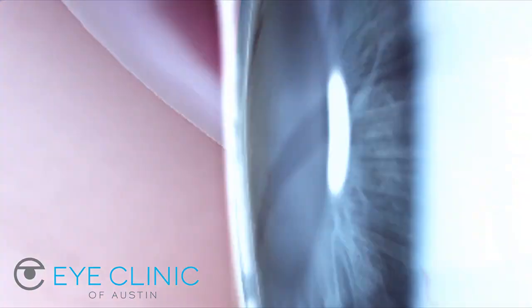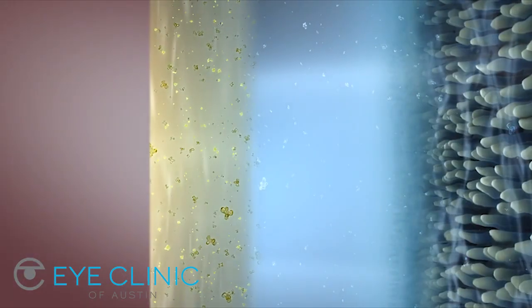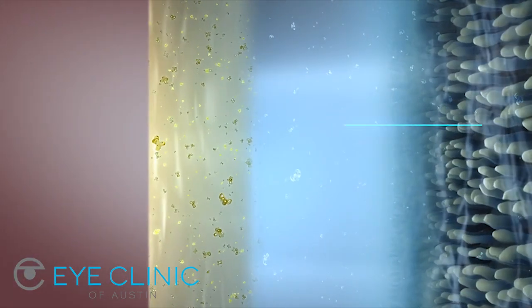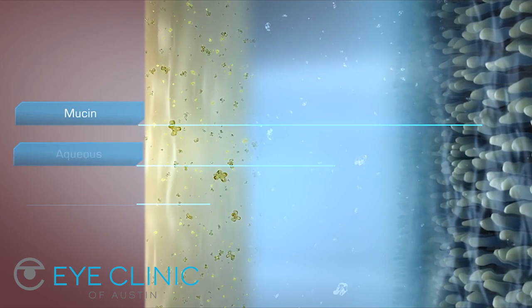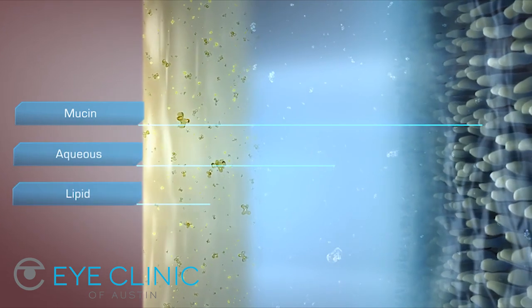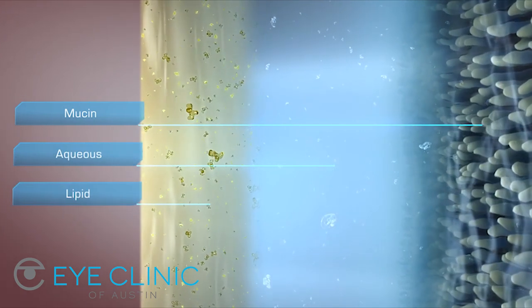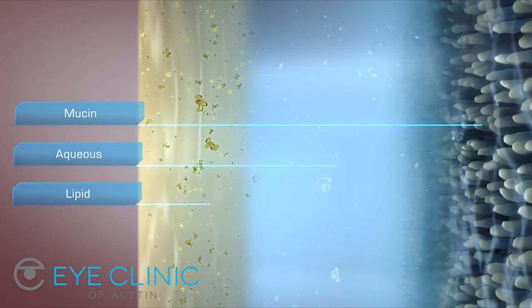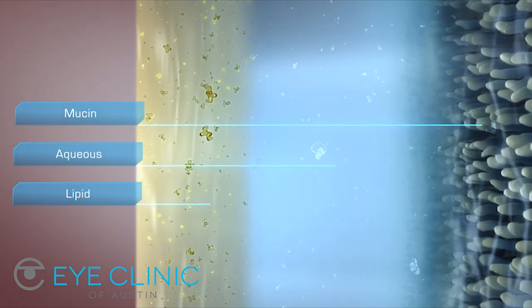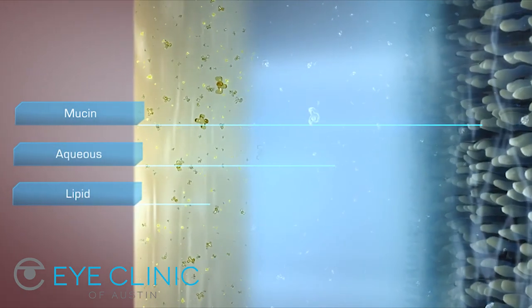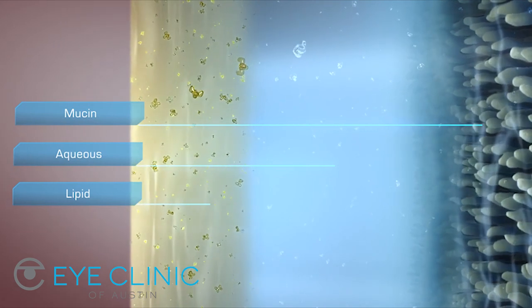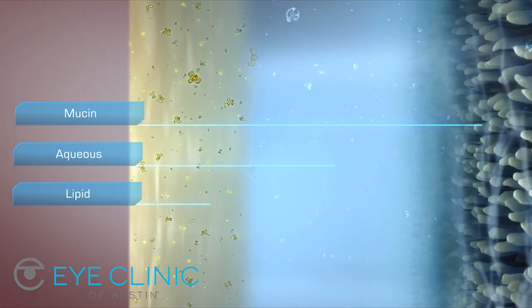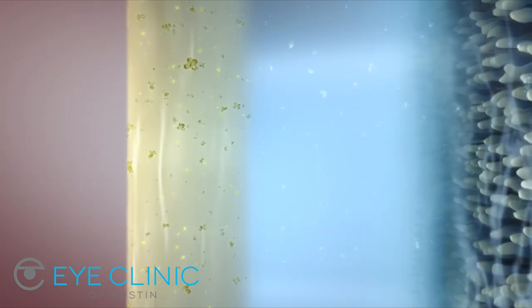The primary components of tears — mucin, aqueous, and lipid — combine to create a complex viscoelastic structure. This complex structure is responsible for a multitude of important functions.